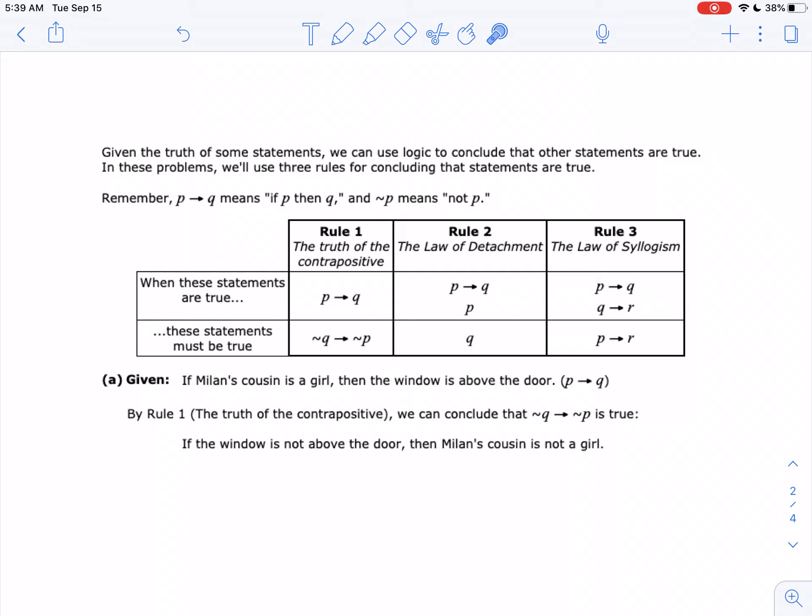So here's an example, or a problem you did. It says, if Milan's cousin is a girl, then the window is above the door. So we can say by the contrapositive, if the window is not above the door, then Milan's cousin is not a girl. We just take the opposite of the conclusion, implies the opposite of the hypothesis, and that's it.